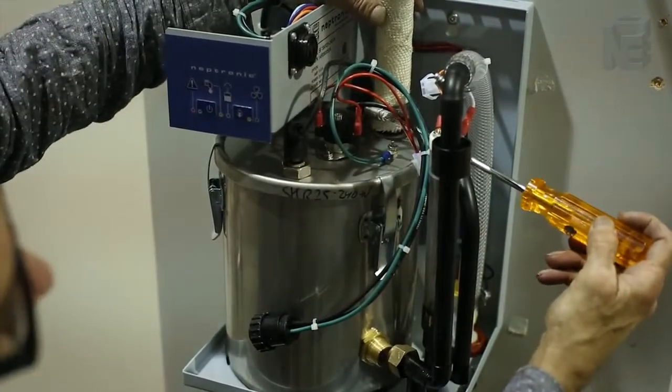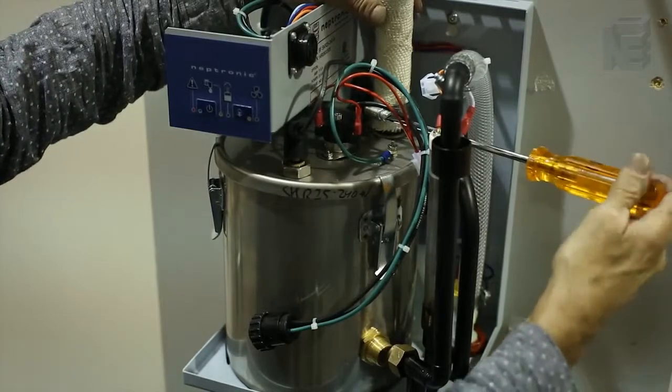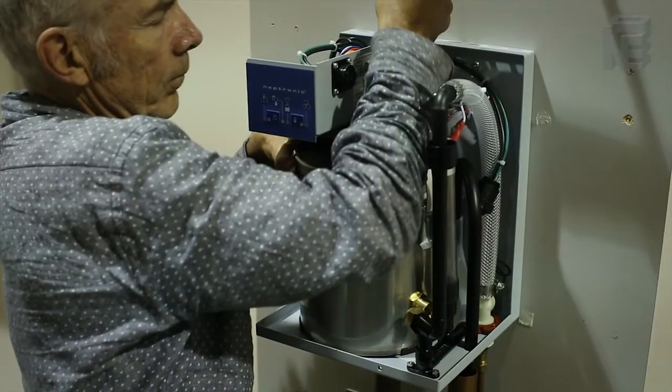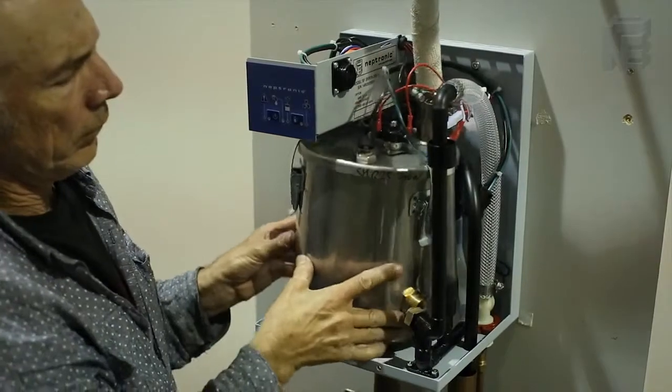Loosen the steel clamp that holds the steam hose securely in place and pry the hose off the steam outlet at the very top of the boiling chamber. Remove the chamber from the unit.